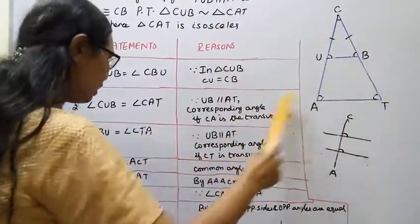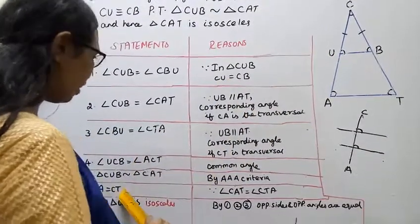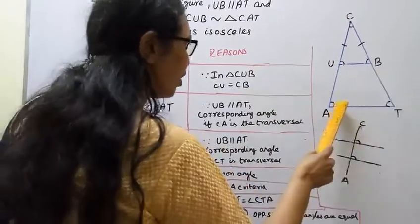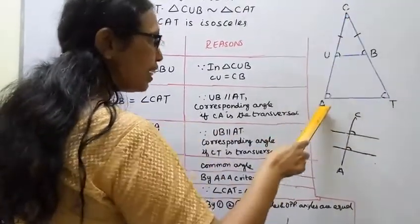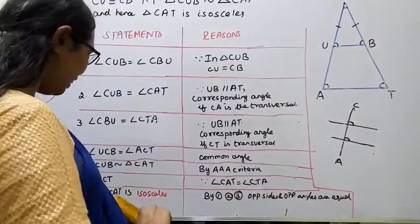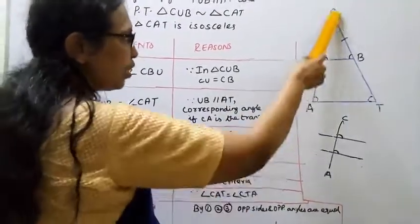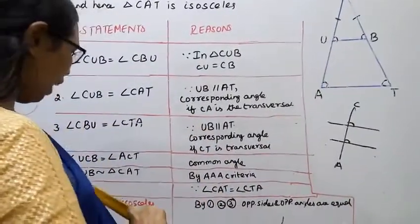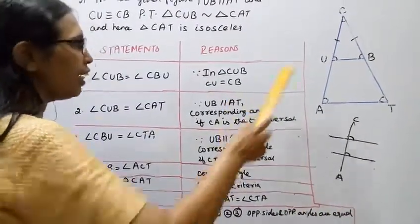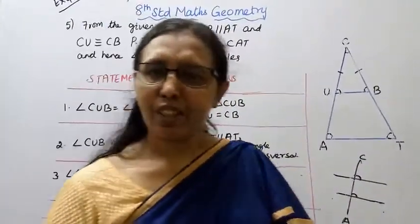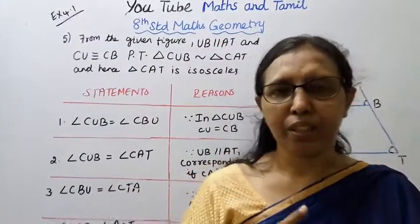Then CA is equal to CT. CA is equal to CT — and therefore triangle CAT is an isosceles triangle, proven. CA is equal to CT: the opposite sides and opposite angles are equal. Triangle CAT is isosceles, and eventually proven. If you want the solution in statement-reason format, this channel helps you get 100 marks. Please subscribe and click the bell button for more videos.